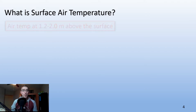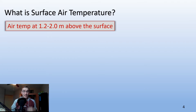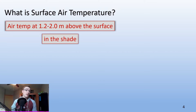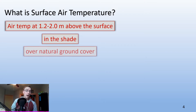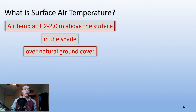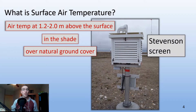So what is surface air temperature? That's a complicated question because you could ask yourself: what is the air temperature at 1.2 to 2.0 meters above the surface? Or what is the temperature in the shade, or possibly over a natural or artificial ground cover? Temperature can vary drastically across the surface. One tool we can use to get more accurate measurements of ambient conditions is the Stevenson screen.